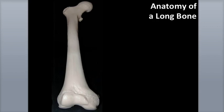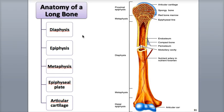Let's now take a look at the overall structure of a typical long bone. The long bones are bones that are longer than they are wide, such as this femur, or thigh bone, as well as the tibia, fibula, radius, ulna, and humerus. The shaft of a long bone is called the diaphysis — this is the long, tube-like body of the bone that makes up most of the bone's length. It consists primarily of compact bone tissue.